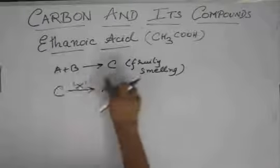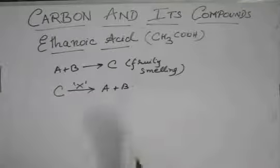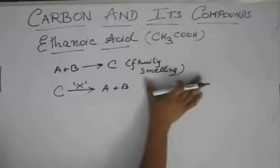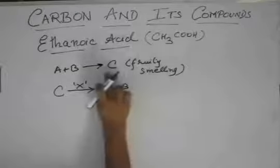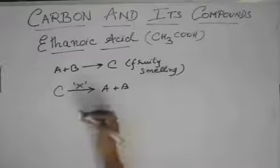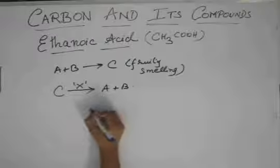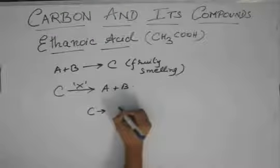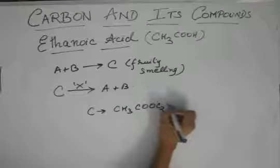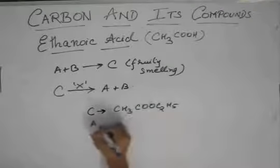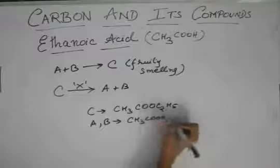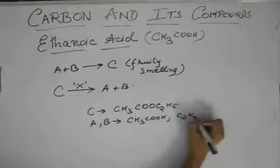From this fruity smelling compound, you directly get the notion that C is an ester and this is an esterification reaction. So you can very well write C as CH3COOC2H5 and A, B as CH3COOH and C2H5OH.